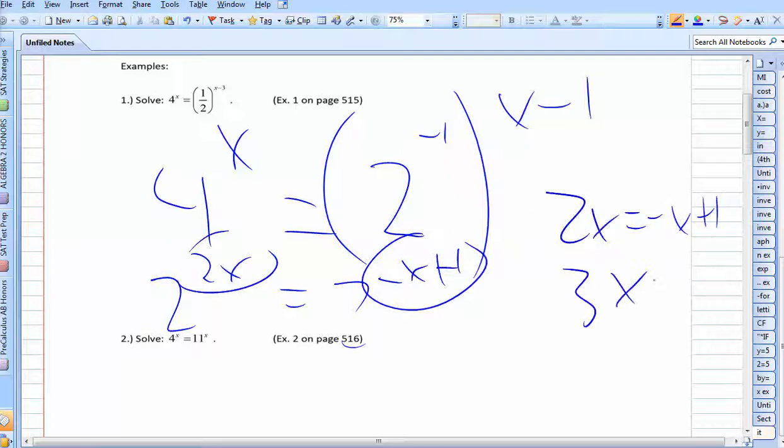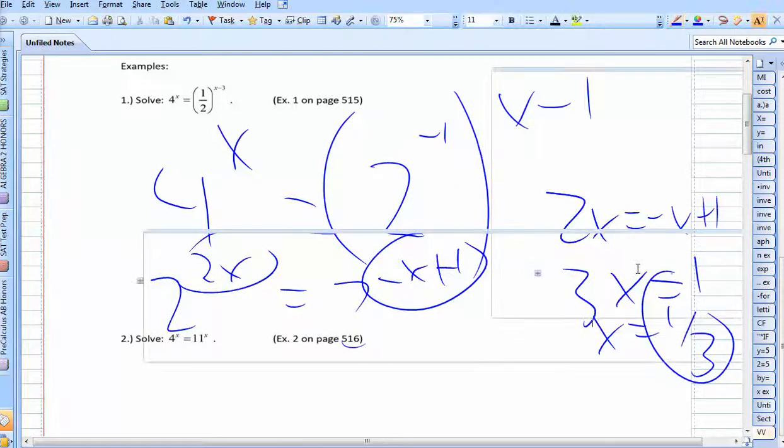I do write a lot neater than this. So X equals 1 third. Then when you're done, you just go down here.